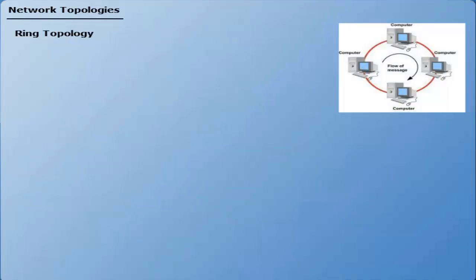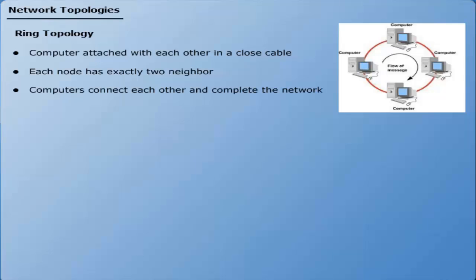The computers are attached with each other in a closed cable. Each node has exactly two neighbors. The computers and devices connect each other and complete the network. Data passes through all nodes until it reaches its final destination. Any breaks in the connection loop might take down the entire network.